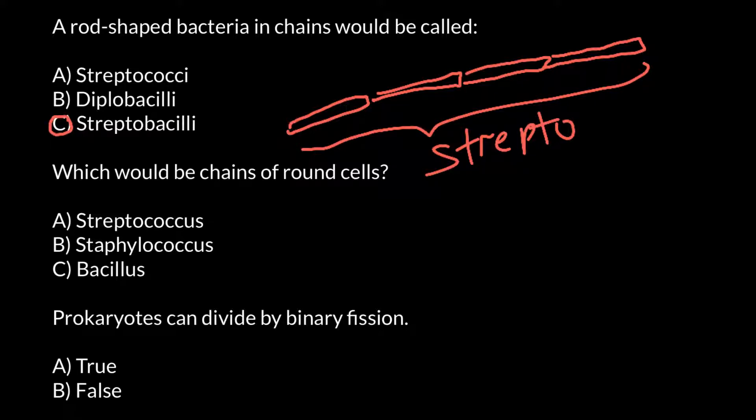Next question: which would be chains of round cells? So this time we have a chain of bacteria of round shape. You already know that it has to contain strepto because we also have here a chain of bacteria, but this time of the round shape, and round shape would be coccus. So the name would be streptococcus, and this is answer A.